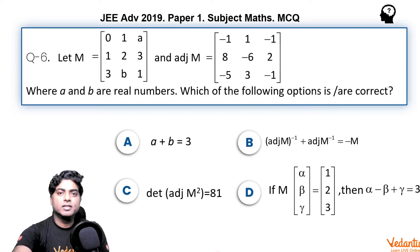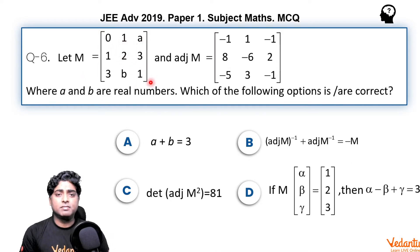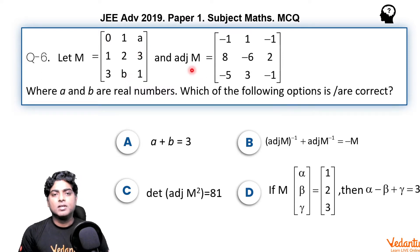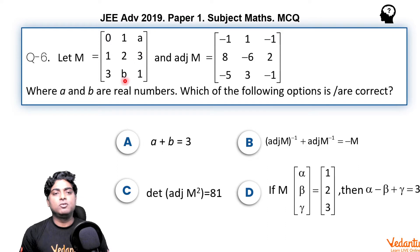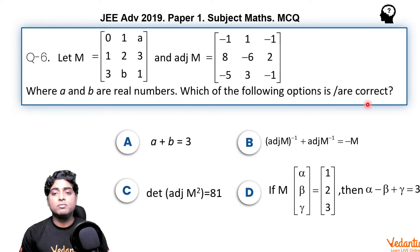Let's have a look at the problem. It says that capital M is a 3×3 matrix with elements given, and there are two unknown elements A and B. The adjoint of M, however, is completely known to us. So by using the value of adjoint M we can easily find the values of A and B. It further says where A and B are real numbers, and more than one option may be correct.